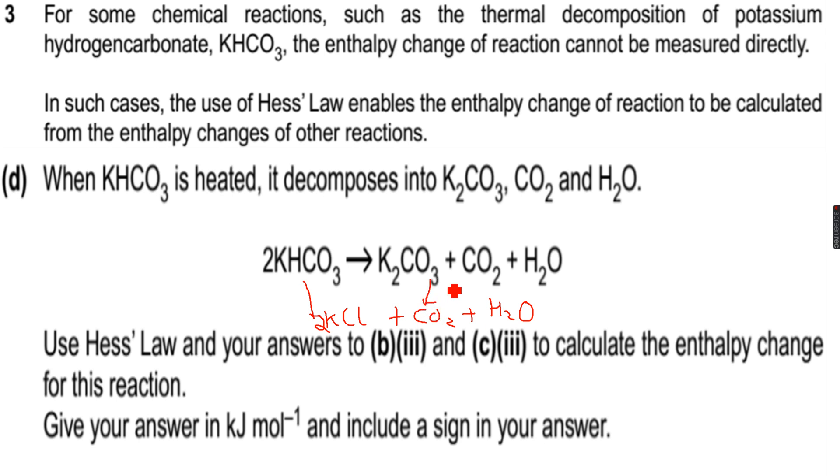So this will be 2 into the delta H we calculated in the first experiment. This will be, no sorry, in the second experiment. So let's write 2 into delta H2, which is the enthalpy change that we calculated in the second experiment. So this would be 2 into 23.2.